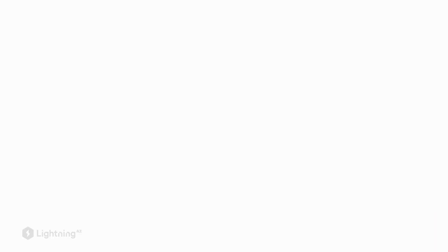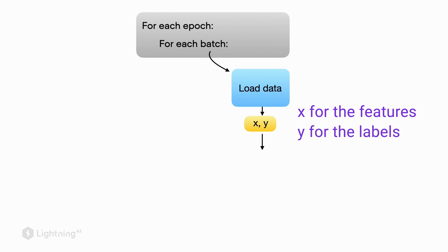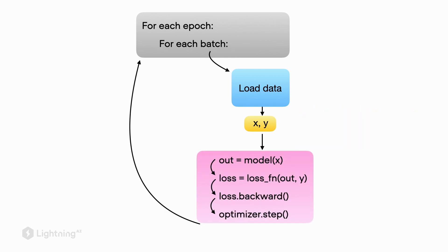So previously, when we worked with perceptrons and the logistic regression model, our data loading looked like as follows. We iterated over the epochs, and then for each batch in the epoch, we loaded the data, let's say x for the features and y for the labels. And then we fed that data to the model.